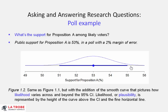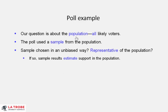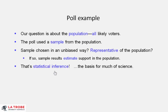There's still a little bit of possibility that it's just outside either way. This is a little microcosm of research. We asked a question about the population — all likely voters — but we can't ask all of them, so we have to use a sample. Based on the sample, we calculate our estimates. It's obviously critical that the sample is representative of the population, that it's not biased in any way. And if we do get a good unbiased representative sample, then it's reasonable to use the results from the sample as estimates of support in the population. That's called statistical inference — inferring from a sample to the population — and that's the basis of lots and lots of science.